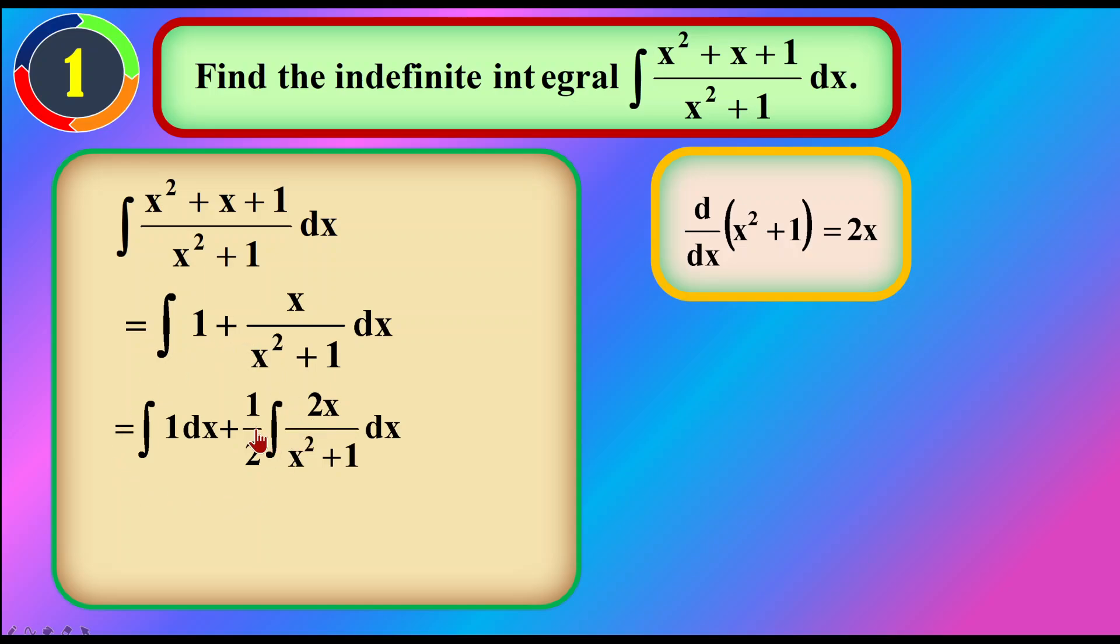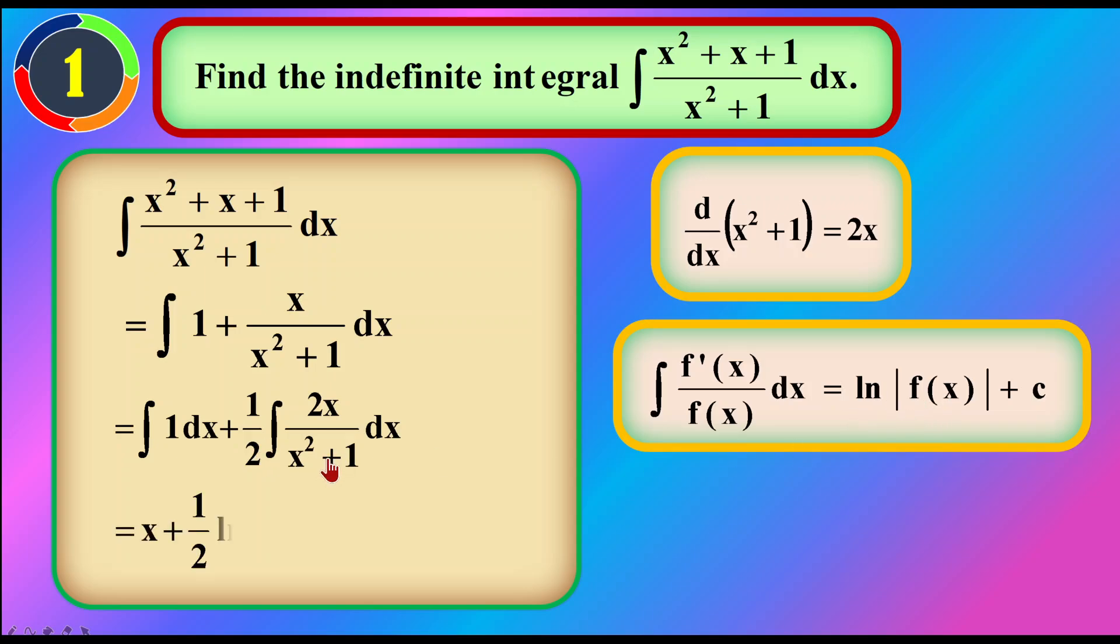What we have here is I already broke this equation into two parts. So that is the integrating of one, which is a very simple integration. And the second part, I already adjusted following what I have in the differentiation. So I adjusted the 2X to the top, means I have F'X on top and FX at the bottom. So what I actually can use now is this formula: F'X over FX is equivalent to ln FX. So I'm going to change it over here with the formula.